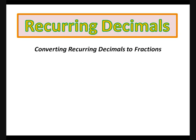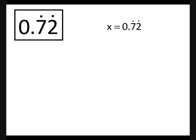Recurring decimals — converting recurring decimals to fractions. Let's start with 0.72 recurring, with the 7 and 2 recurring.